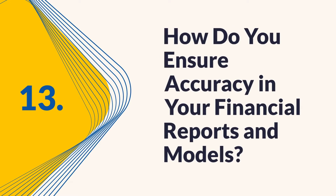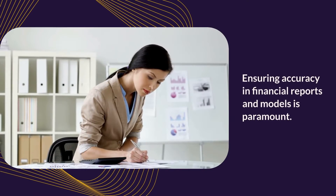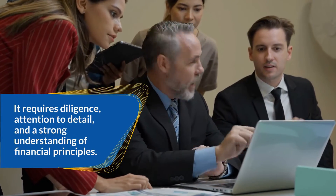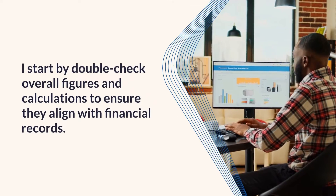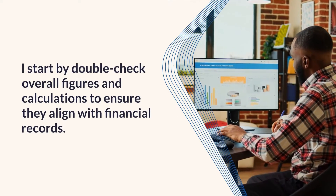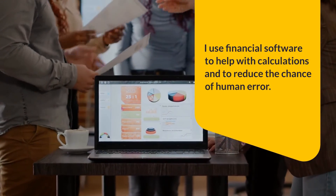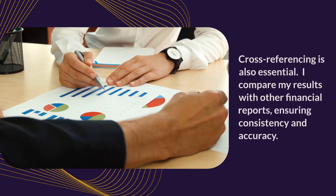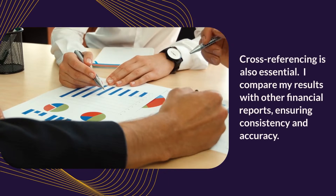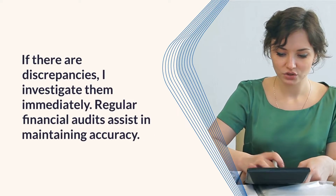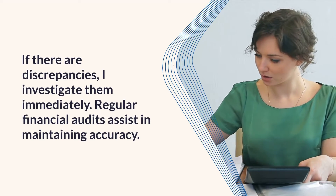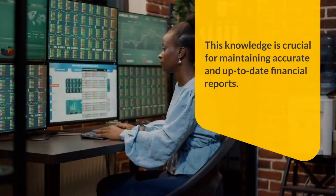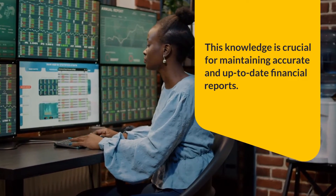Question 13: How do you ensure accuracy in your financial reports and models? Ensuring accuracy requires diligence, attention to detail, and a strong understanding of financial principles. I start by double-checking overall figures and calculations to ensure they align with financial records, and use financial software to reduce the chance of human error. Cross-referencing is also essential — I compare results with other financial reports to ensure consistency. If there are discrepancies, I investigate them immediately. Regular financial audits assist in maintaining accuracy, and I continuously educate myself on changes in financial regulations and accounting standards.